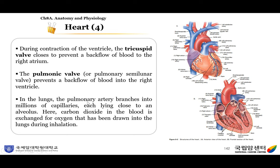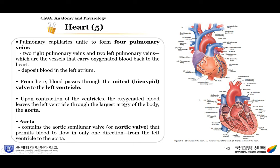In the lungs, the pulmonary artery branches into millions of capillaries, each lying close to an alveolus. Carbon dioxide in the blood is exchanged for oxygen drawn into the lungs during inhalation. The pulmonary capillaries unite to form four pulmonary veins — two right and two left — which carry oxygenated blood back to the heart's left atrium. From there, blood passes through the mitral valve (or bicuspid valve) to the left ventricle. Upon contraction, oxygenated blood leaves the left ventricle through the aorta, which contains the aortic semilunar valve (aortic valve) that permits blood to flow only from the left ventricle to the aorta.